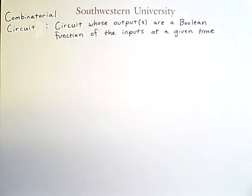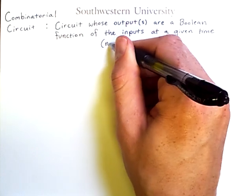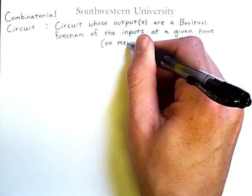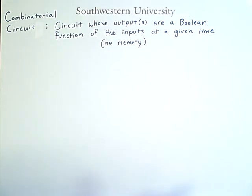One way of combining several gates together is into something called a combinatorial circuit. This is a circuit whose outputs are a boolean function of the inputs at a given time. In particular, such a circuit has no memory.